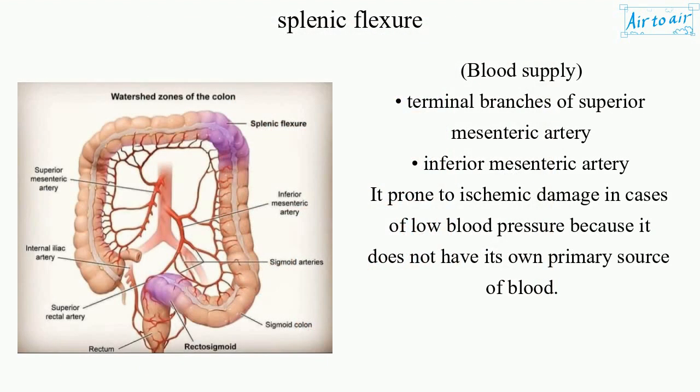Blood supply: terminal branches of the superior mesenteric artery and inferior mesenteric artery. It is prone to ischemic damage in cases of low blood pressure because it does not have its own primary source of blood.